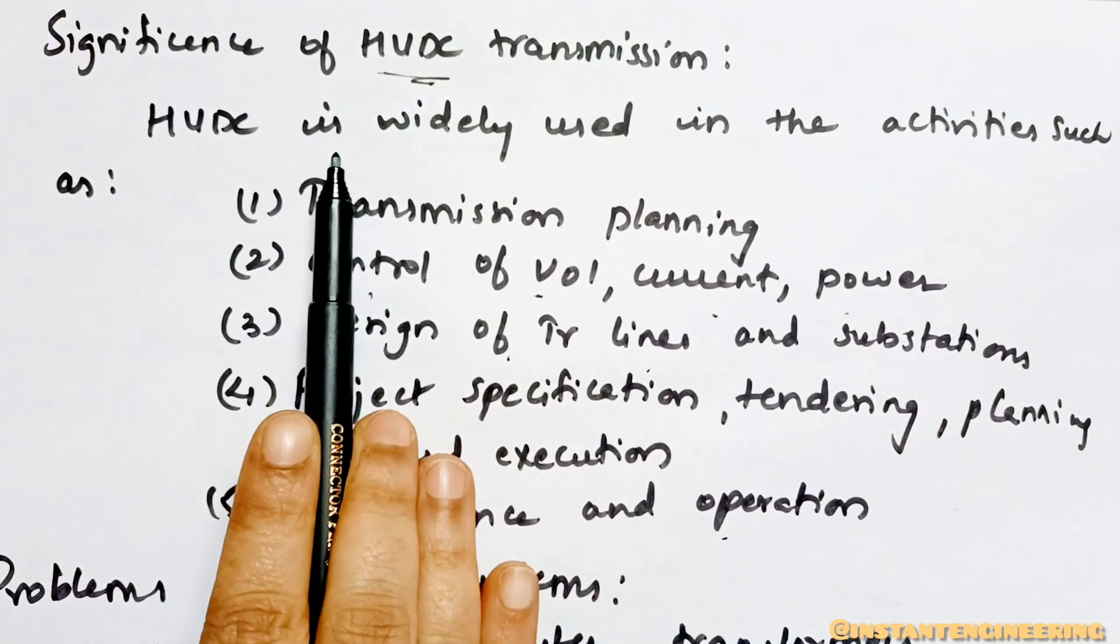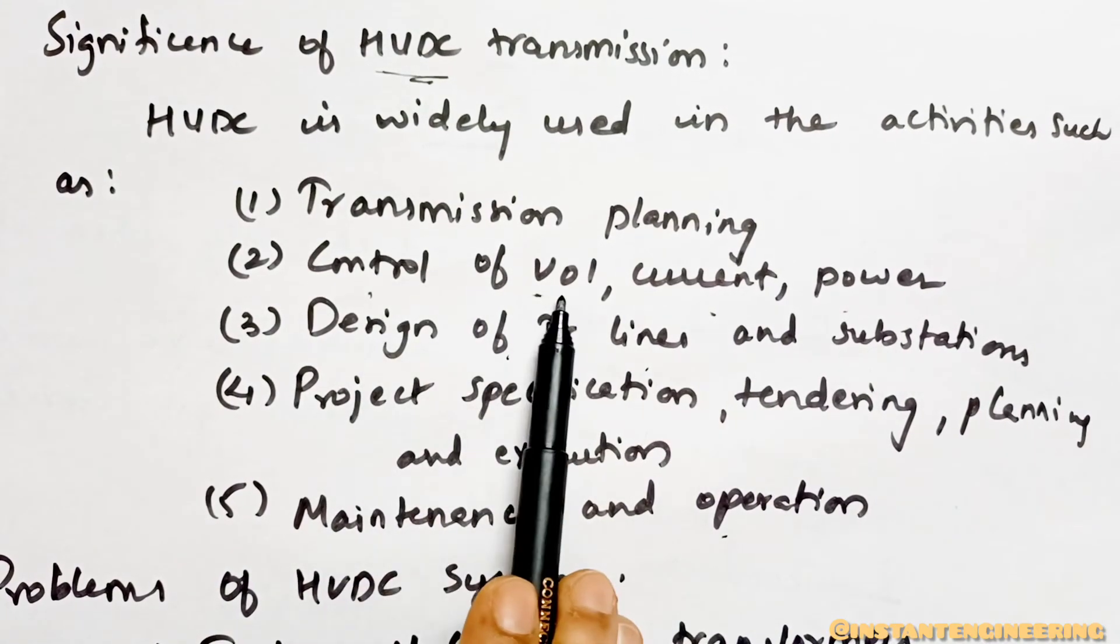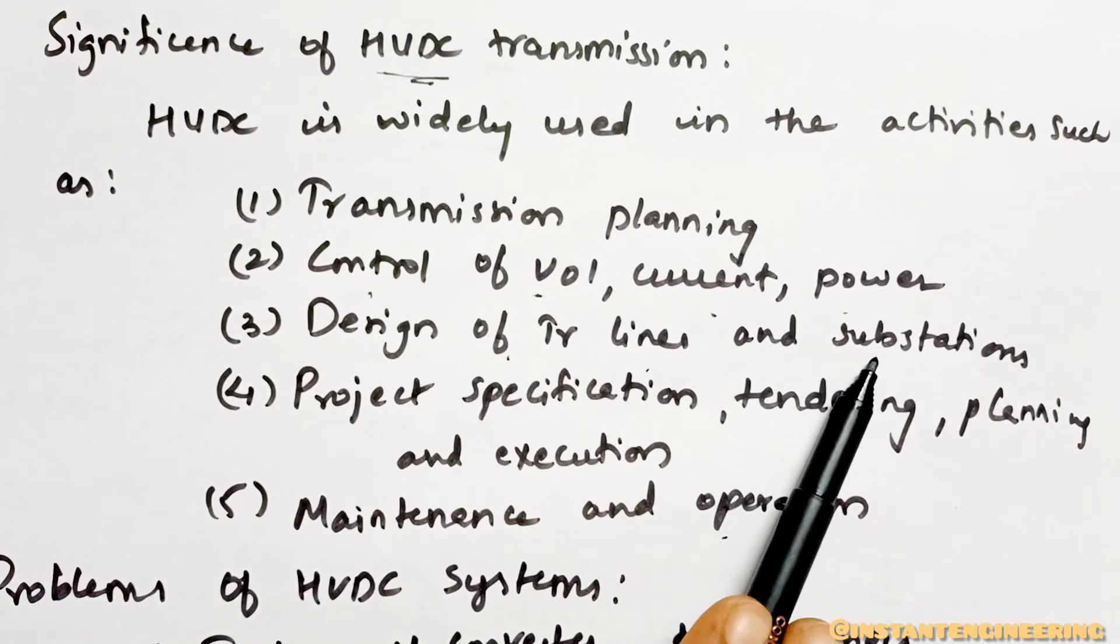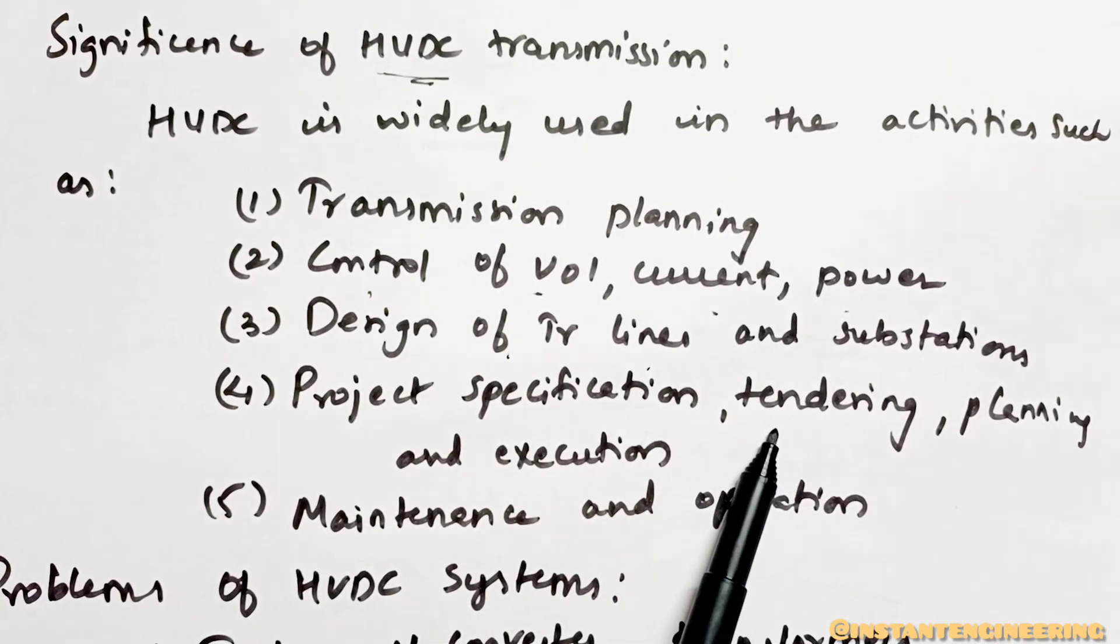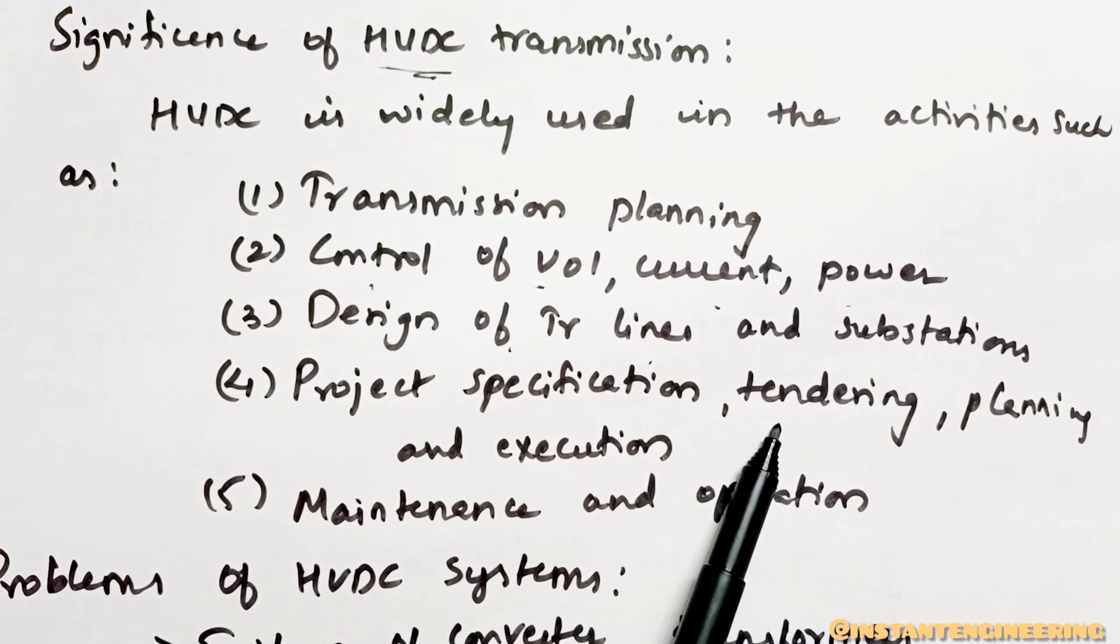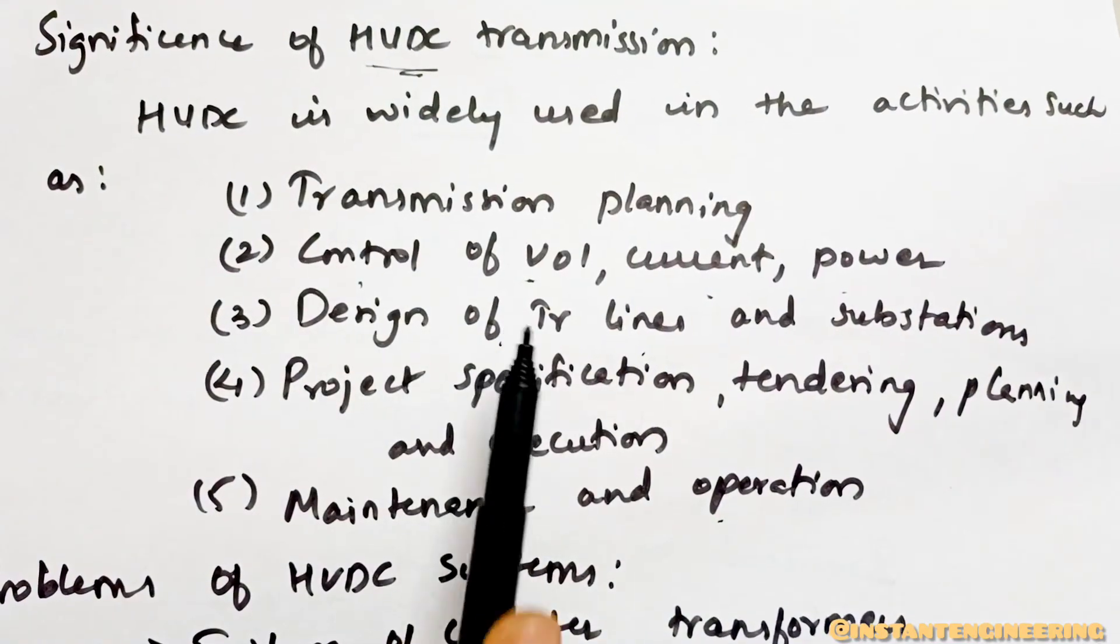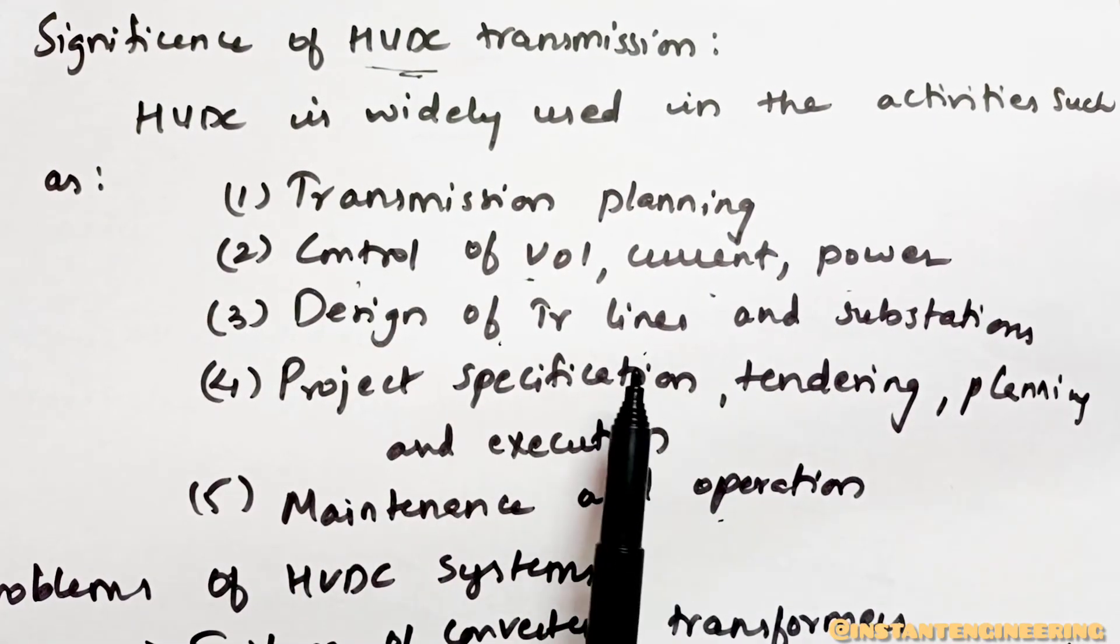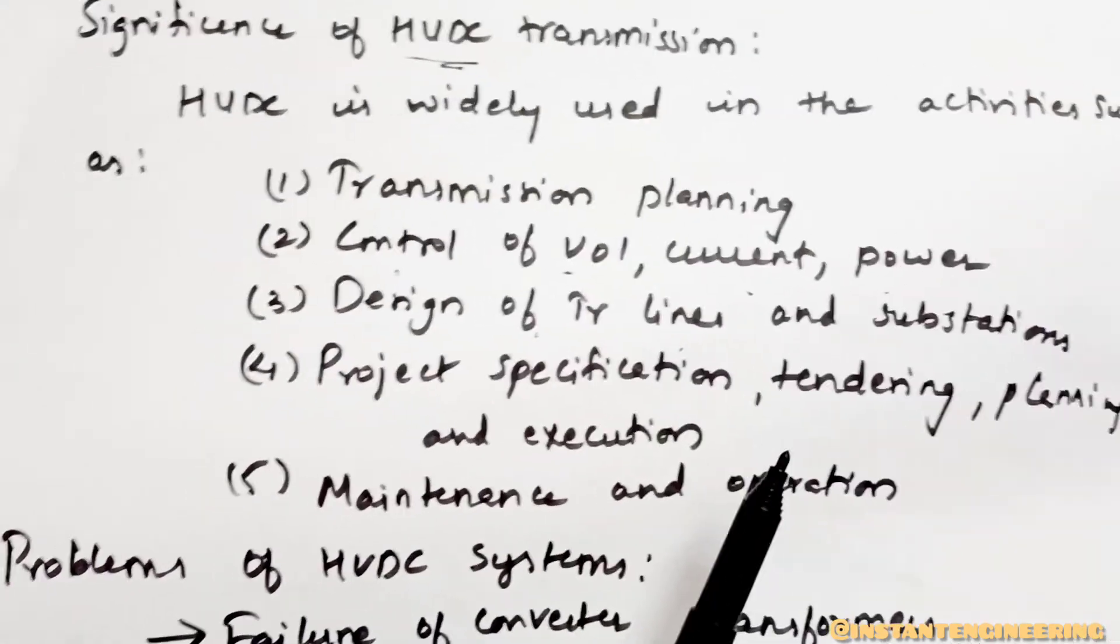Where we will be using this HVDC in activities such as: when you are planning for transmission, control of voltage, current, power, design of transmission lines, when you are designing substations, project specifications, tender when they do tendering for substations and power stations, they have to use HVDC transmission. They have to tell they are using these HVDC links. Planning, execution, maintenance, and operation.